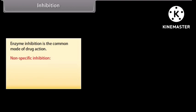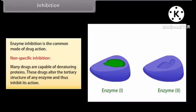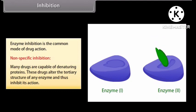Enzyme inhibition is the common mode of drug action. Non-specific inhibition: many drugs are capable of denaturing proteins. These drugs alter the tertiary structure of an enzyme and thus inhibit its action. For example, heavy metal salts, alcohol, formaldehyde, and phenol inhibit enzymes non-specifically.